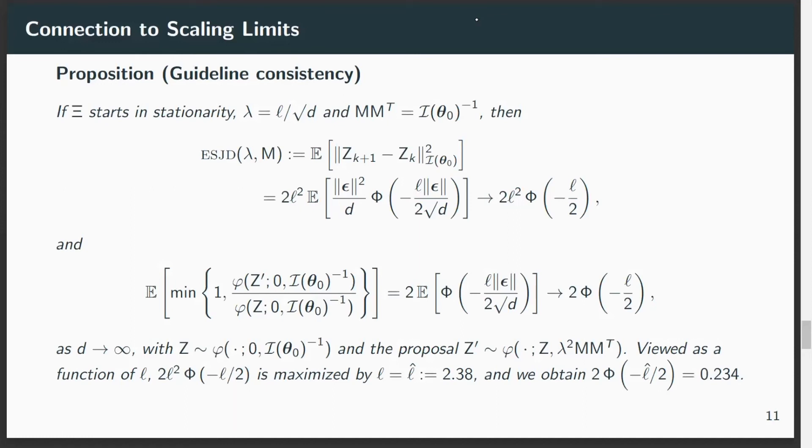We start with the case where we do take the posterior covariance to match the proposal again. In this case, as d goes to infinity, we can see that our formula corresponds exactly to the formula that we get in traditional large-dimensional asymptotics, and we do correspondingly get exactly the right asymptotic optimal acceptance rate of 23.4 percent to the point.